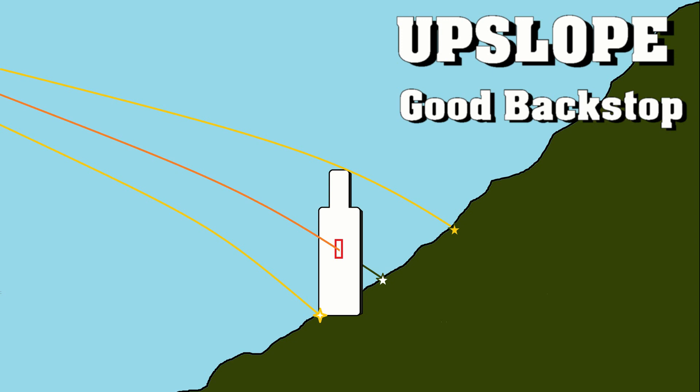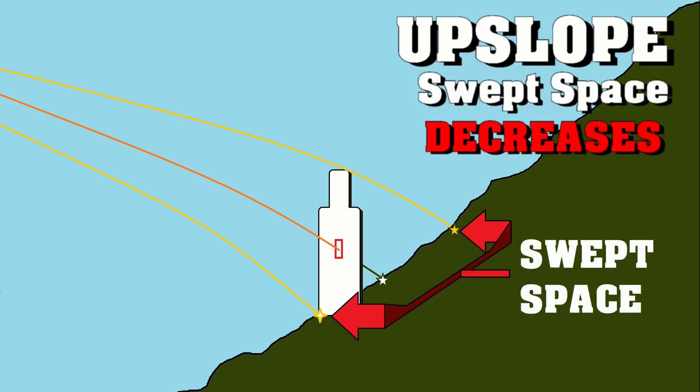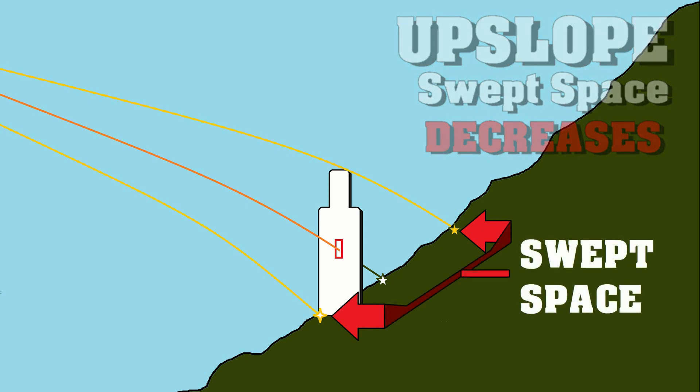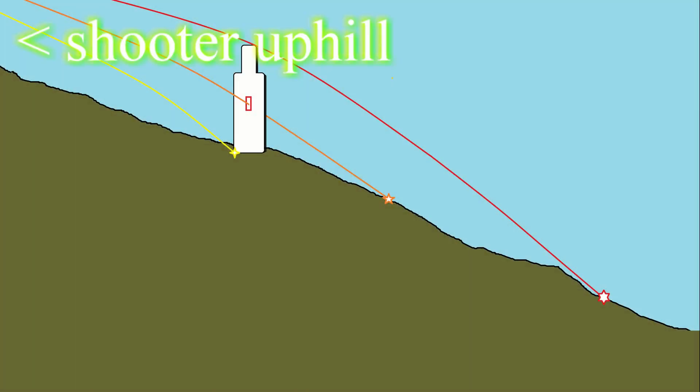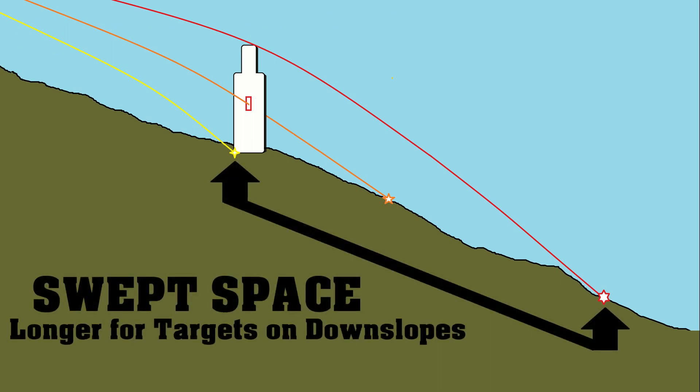A lot of guys like a rising backdrop because you can see splash if you miss, and it's true that it's easy to adjust fire that way with a clear splash on the hill behind the target. However, looking at the concept, the swept space decreases in this case. When you compare this to a target standing on ground that is sloping away from the shooter, all of a sudden your swept space increases. That linear measurement on the ground represents where, if the bullet were to pass through the target or if the target were standing within that swept space, you would still score a hit.